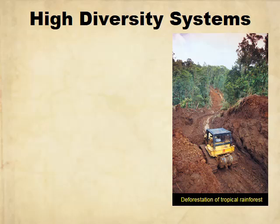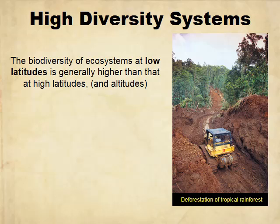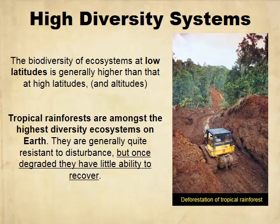In total contrast, high diversity ecosystems are tropical rainforests, which are the most diverse ecosystems in the world. These happen at low latitudes — at the equator. They have very high inertia and very high resilience, so they're quite resistant to disturbance. But once you cut them down, especially through clear-cutting, they do not recover well.